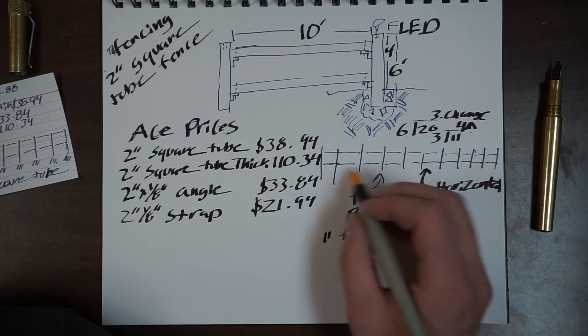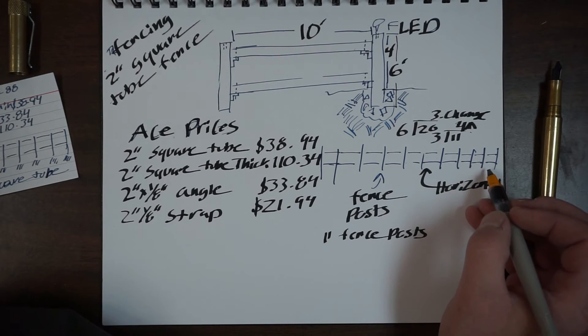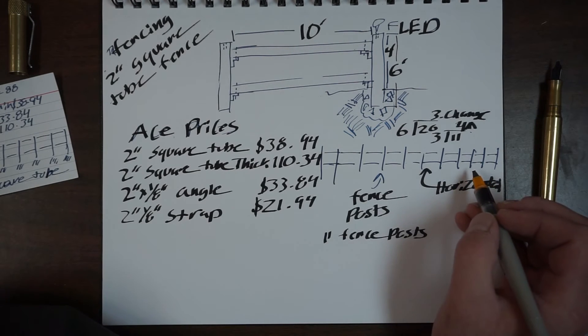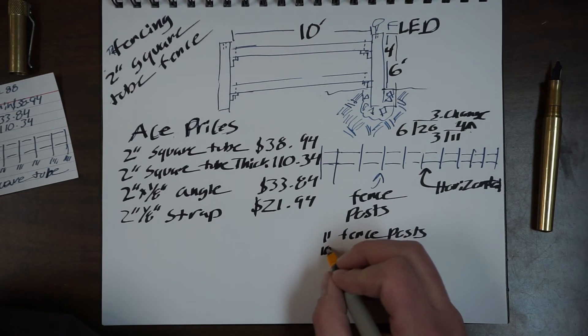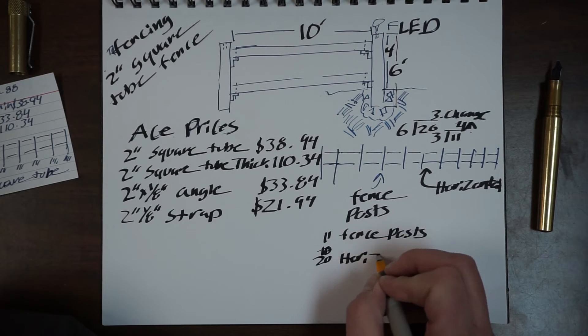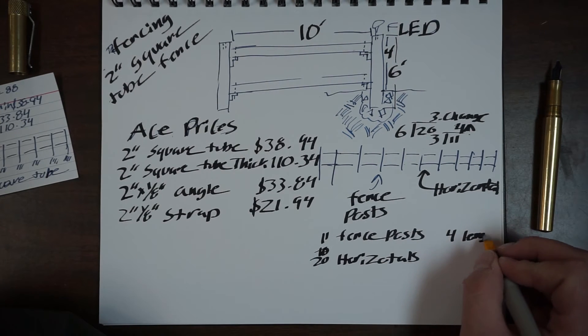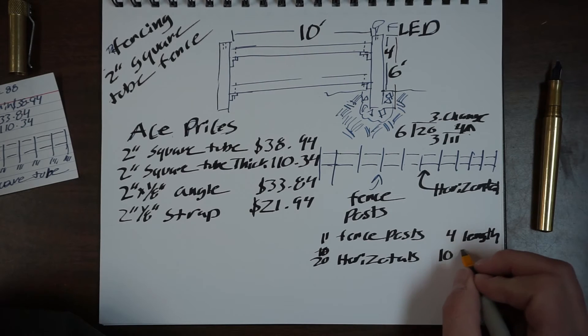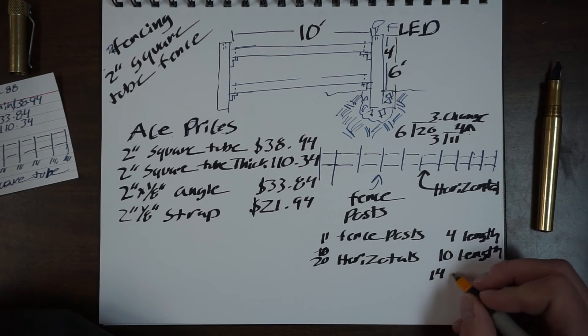And now we count our horizontals, which is twenty. Twenty horizontals each of which is ten foot long. Our steel comes in twenty foot lengths. So we can assume we're going to buy ten lengths of steel to produce this many horizontals. This is going to leave us with fourteen lengths total.